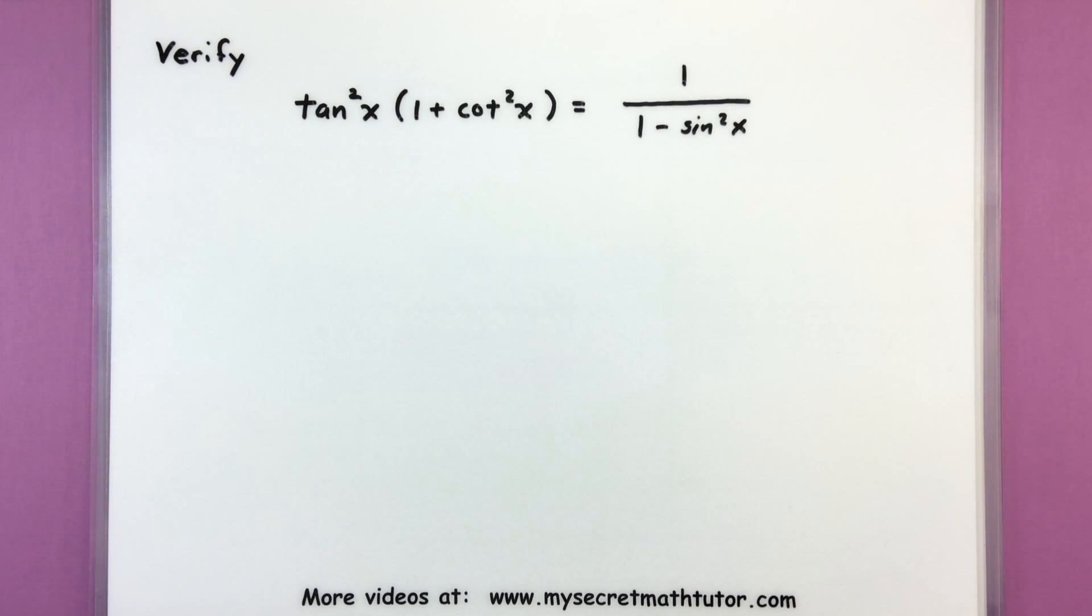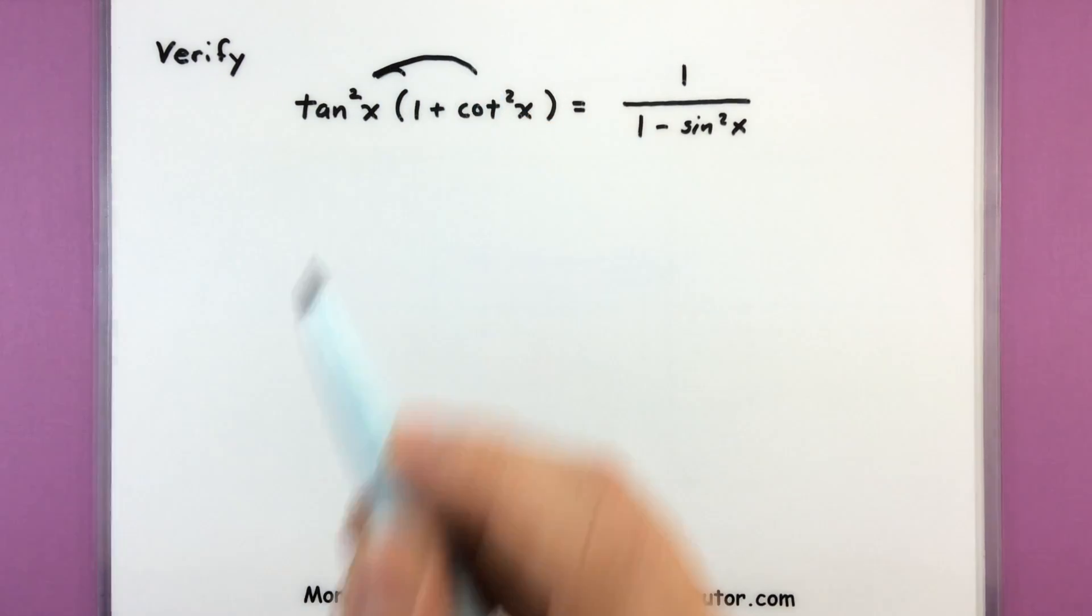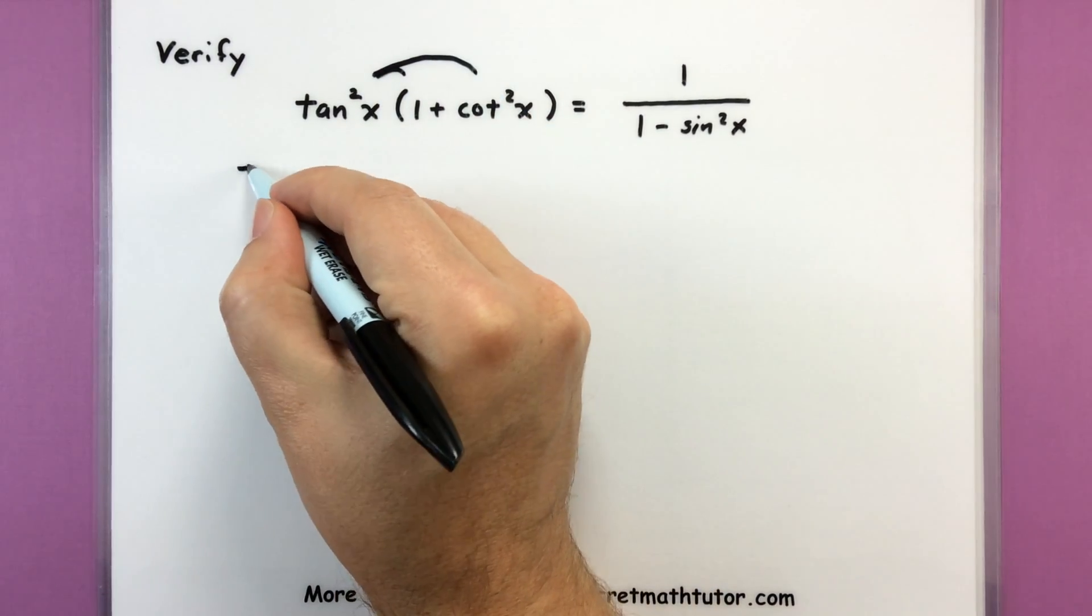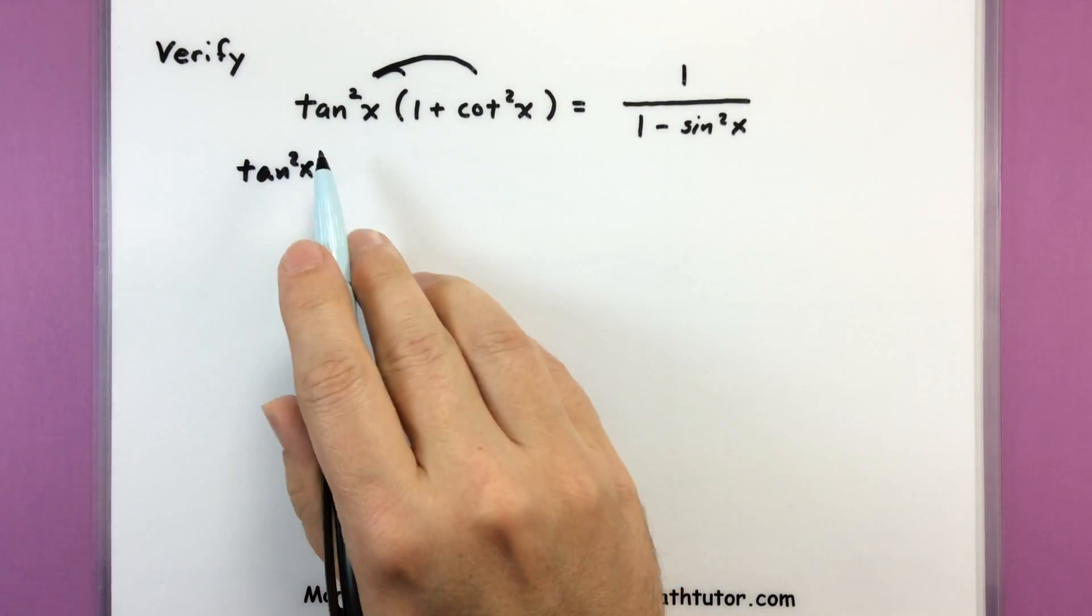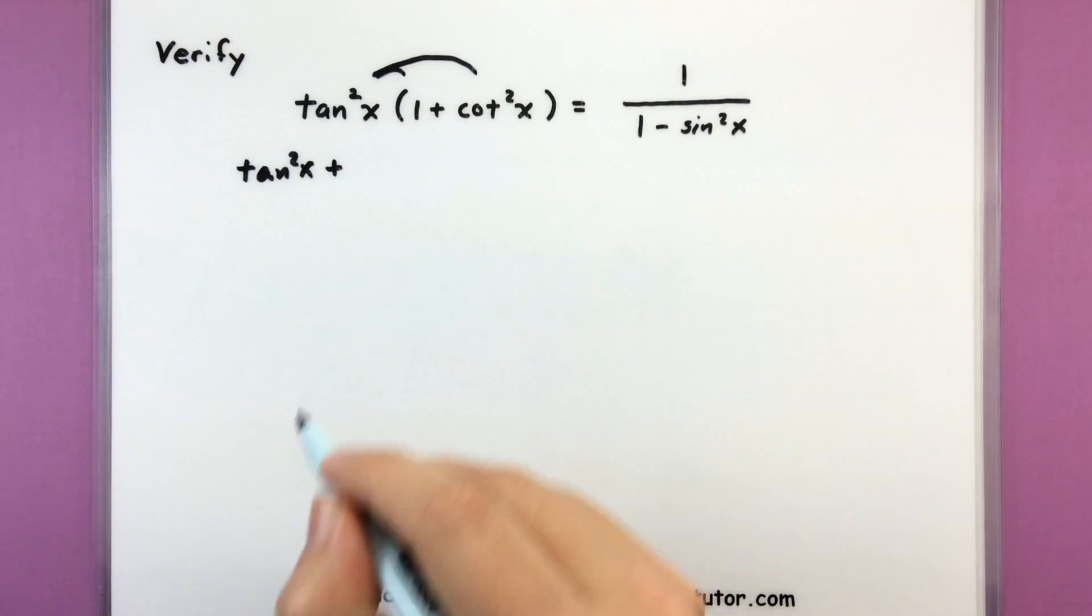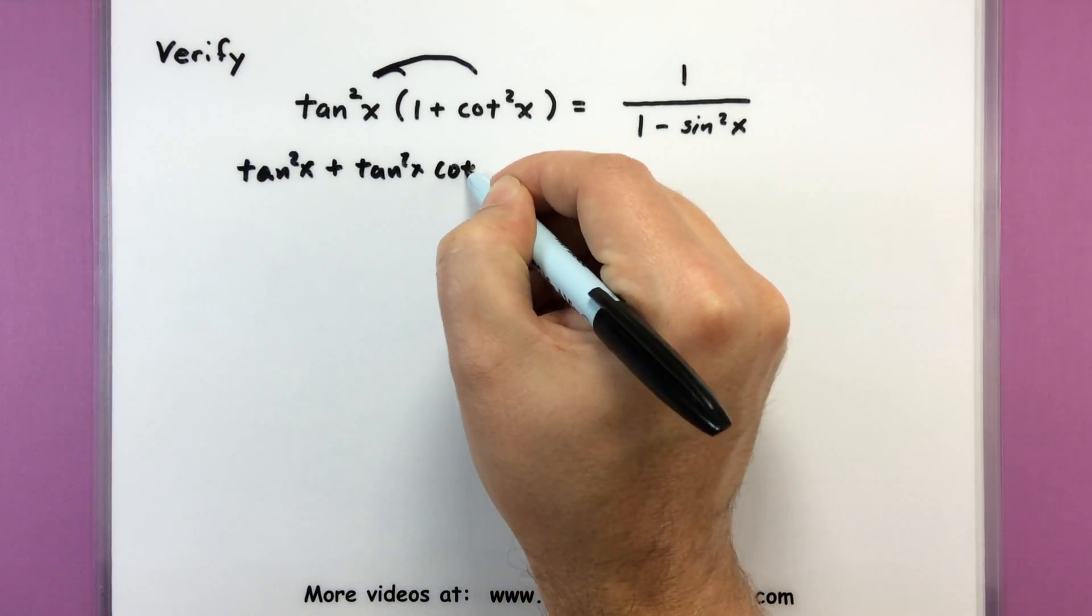Now for this next one let's do tangent squared of x multiplied by 1 plus cotangent squared of x. That is all equal to 1 divided by 1 minus sine squared of x. Lots of stuff going on in this one. So I'm going to start over here on the left again. I think I'll just first start off by distributing my tangent squared. So tangent squared x multiplied by 1 then I'll have plus tangent squared multiplied by cotangent squared.